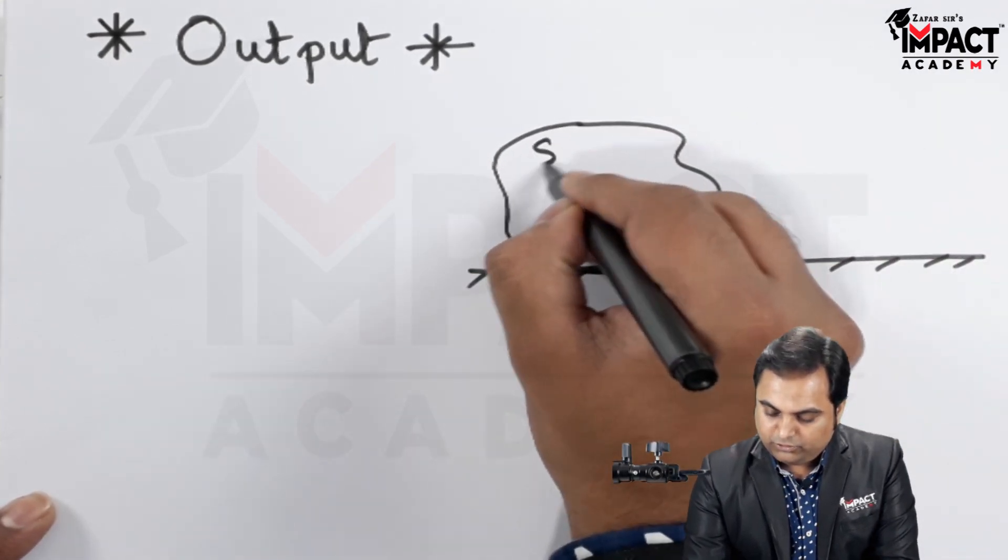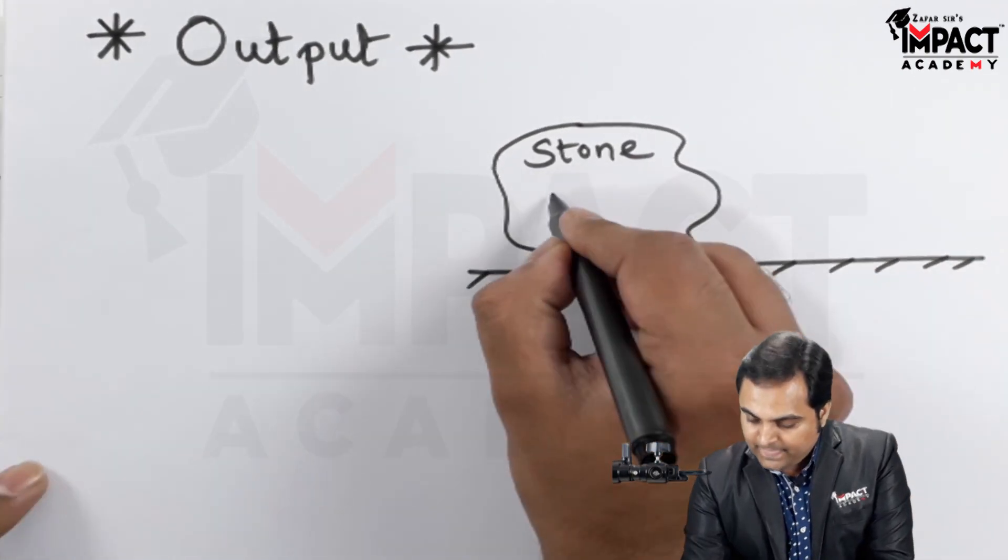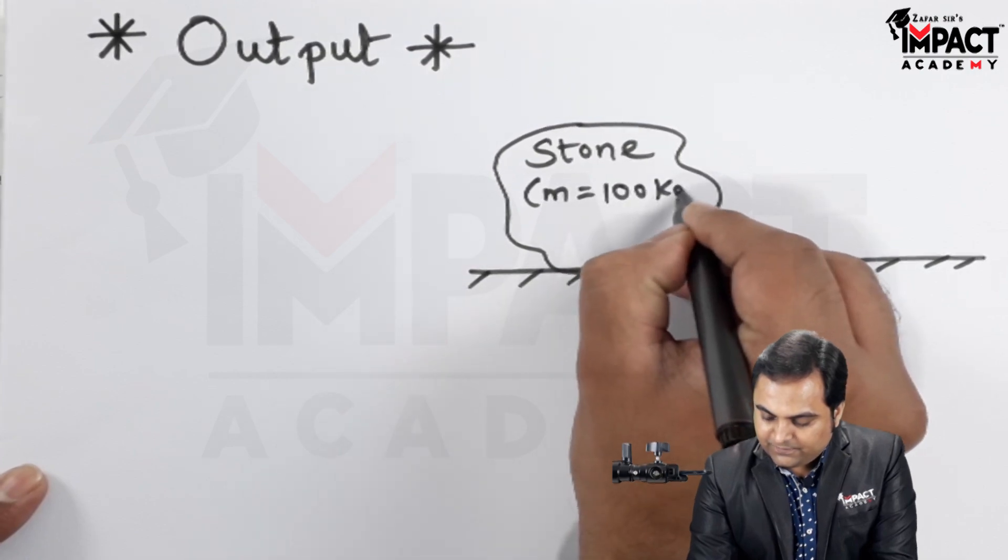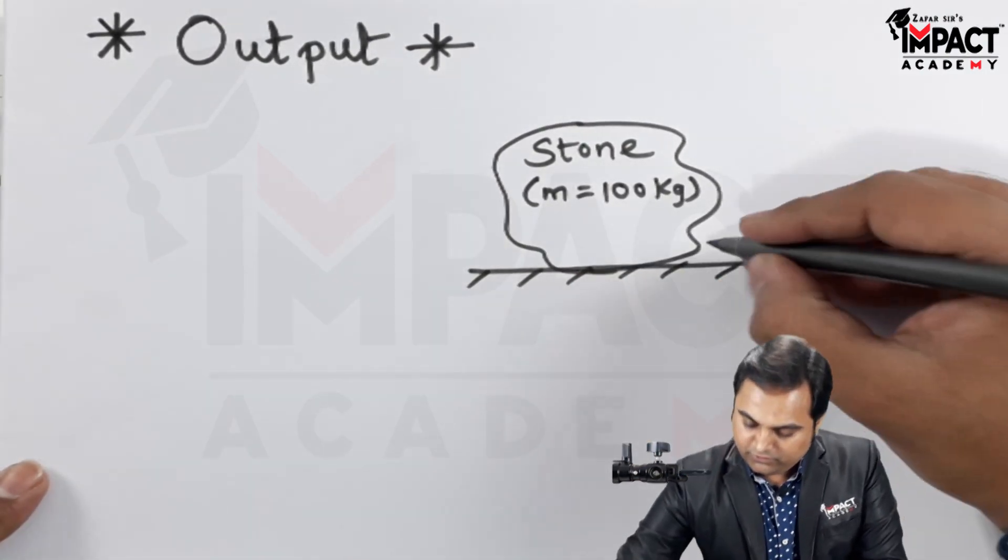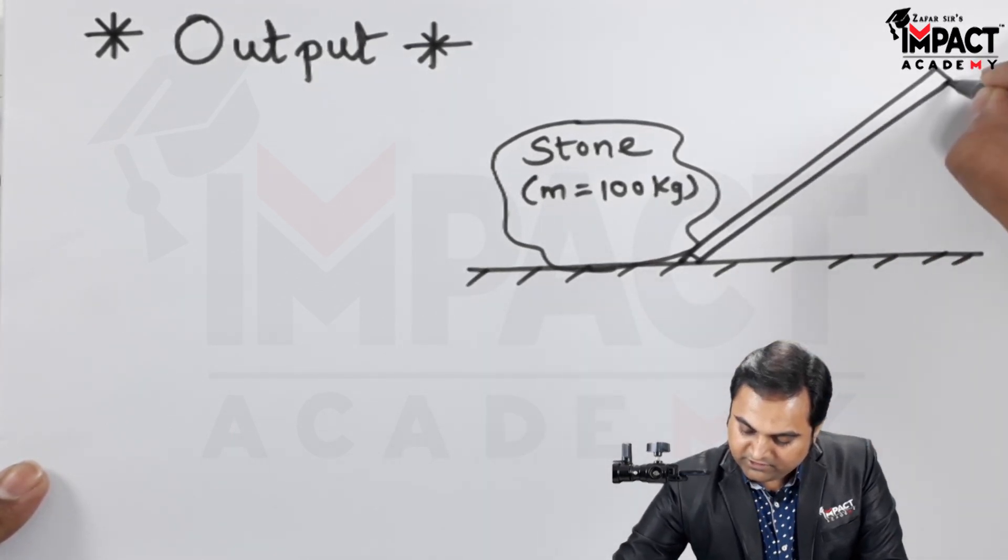Here the heavy load, for example assuming a stone which we have to move having mass 100 kg, just an assumption. Here, now this needs to be moved, so the simple approach is to use a lever and fulcrum arrangement here.